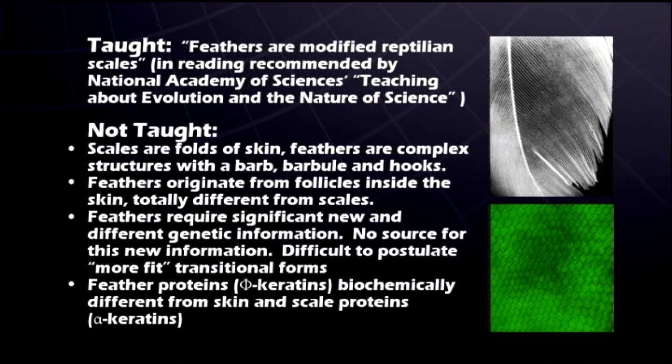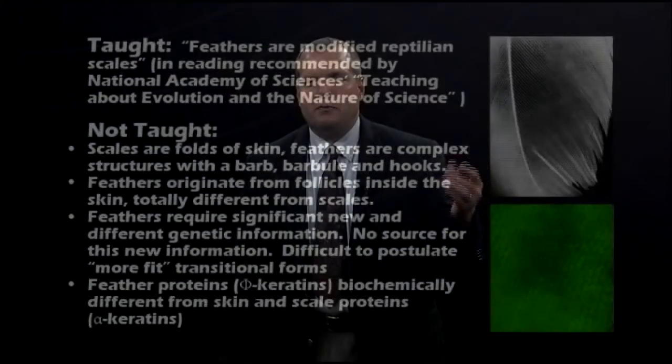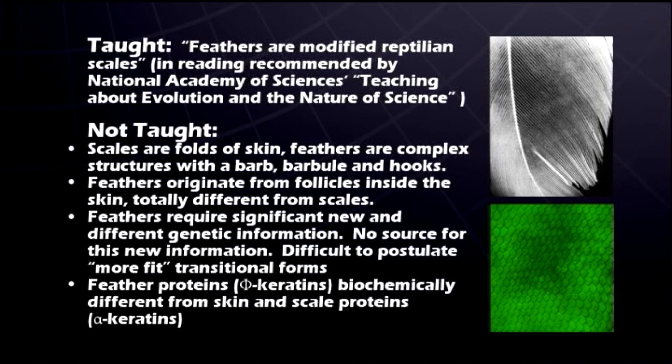This is actually a serious problem, though it's not taught as such. The National Academy of Sciences, in a study called 'Teaching About Evolution and the Nature of Science,' recommends reading that says 'feathers are modified reptilian scales' — a very simplistic statement. Other evolutionist literature says scales became frayed and those frayed scales somehow eventually turned into feathers. But if we look at feathers and scales under a microscope, we see the tremendous difference between them. We also see the incredibly intricate design of feathers, with barbs, barbules, and hooks — very sophisticated design features. Saying that a feather could just randomly generate itself from a scale goes against what true science tells us.